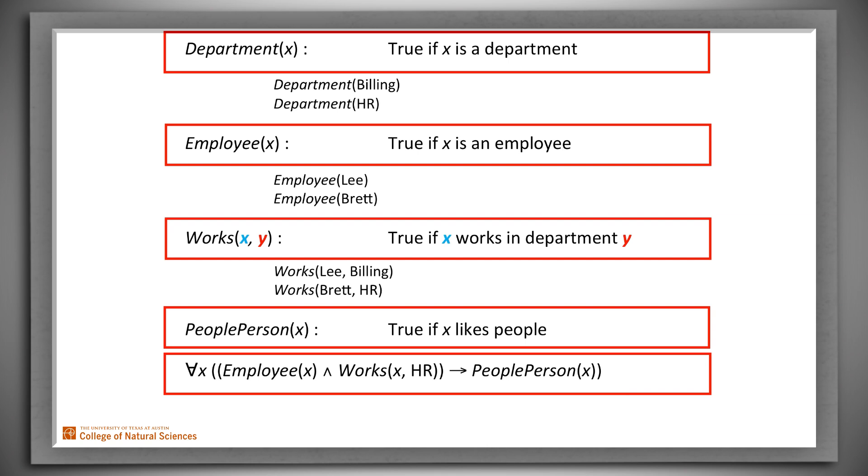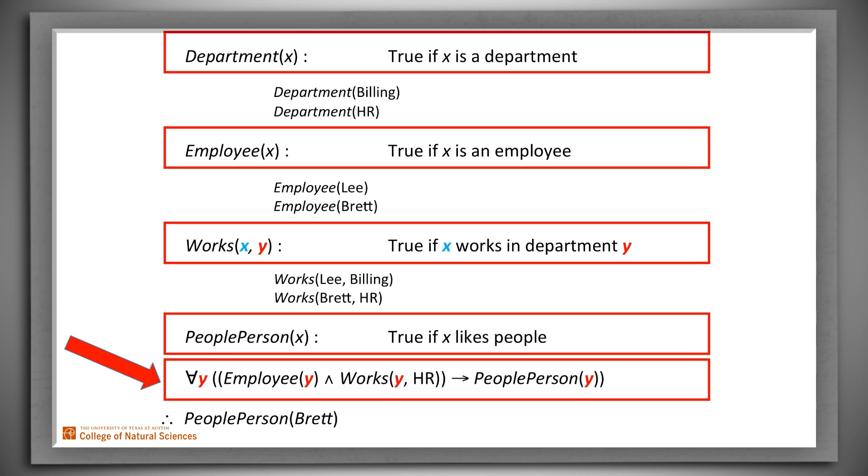Now if this claim is true for all values of X, it has to be true of Brett. So if we substitute Brett for each occurrence of X, we can reason that if Brett is an employee, which we know, and if Brett works in HR, which we also know, then Brett is a people person. Notice that we didn't have to use X in our premise about employees who work in HR. We could have used Y or anything else. The only thing that matters is that we use the same variable name consistently throughout the expression. Well, actually there is one other important thing. If an expression exploits multiple nested quantifiers, each of them has to use a different name.